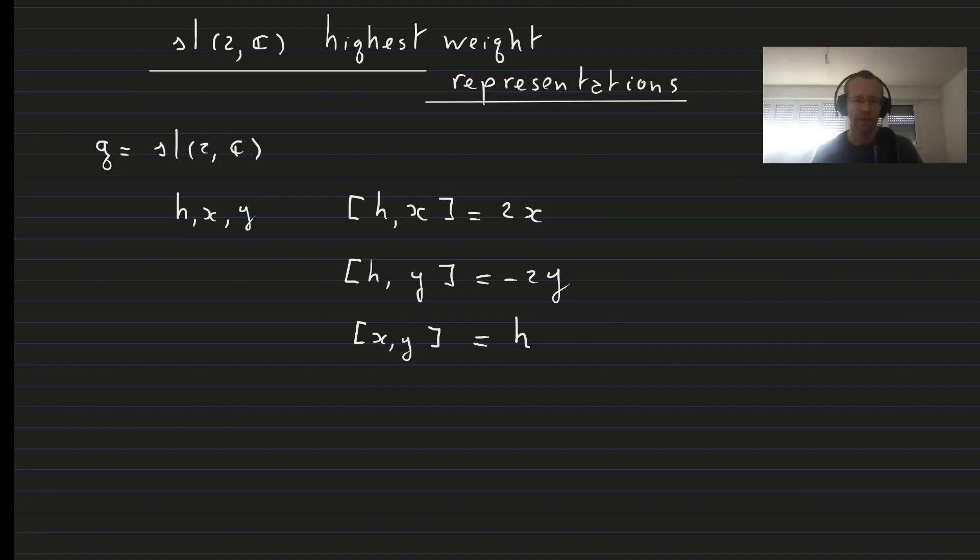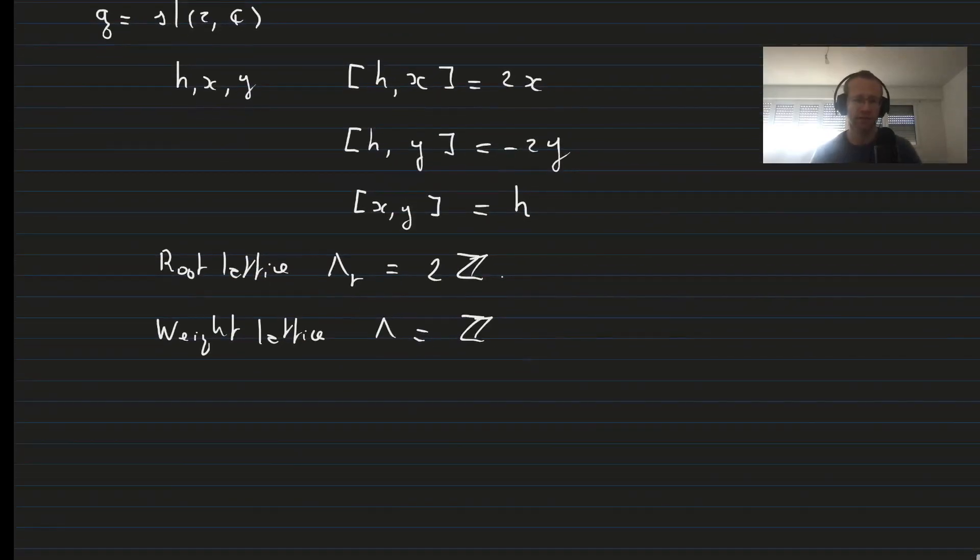From the coefficient of X in the Hx commutation relation, we decide that the root lattice, lambda r, is equal to 2Z. Therefore the weight lattice of this SL2 algebra will be equal to Z. Lambda is equal to Z.